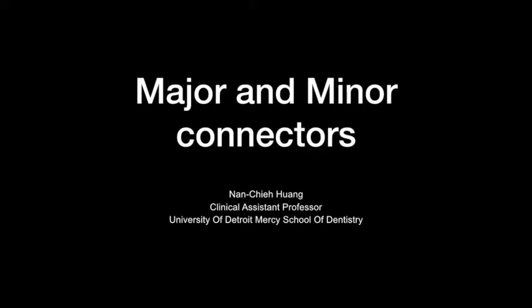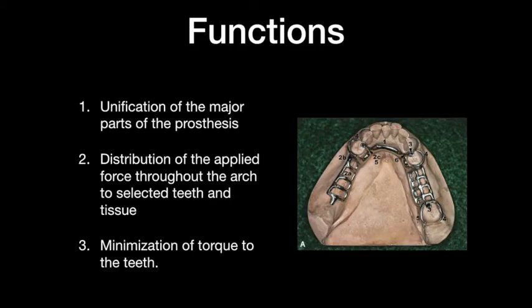Today we will discuss the first important component in the RPD, which is the Major Connector. The Major Connector has three major functions. First, it unifies the major part of the prosthesis — the Major Connector connects all components from right to left. Second, it distributes the applied force through the arch to the tooth or tissue. Third, it minimizes the torque to the tissue.